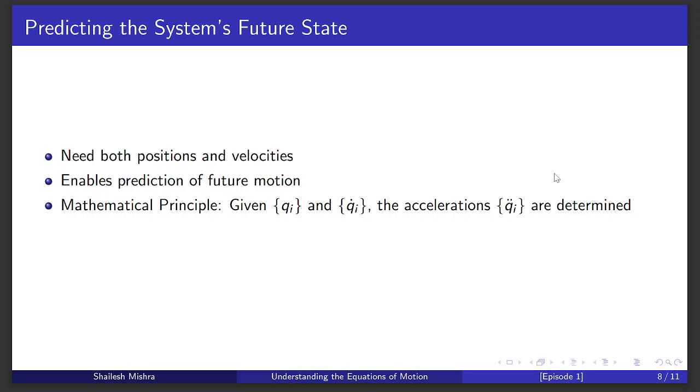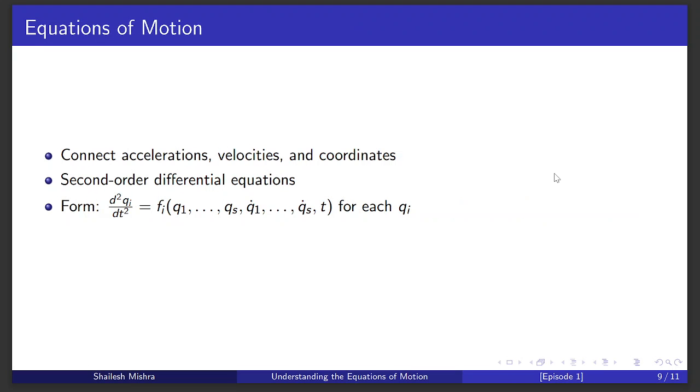All this leads us to the equations of motion. They're formulas that connect acceleration, velocity, and position. Mathematically, they're second-order differential equations. They look like this: the second derivative of qᵢ with respect to t equals a function of q₁, q₂, till qₛ, q̇₁, q̇₂, till q̇ₛ, and t. Solving these tells us the system's future path.